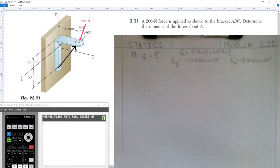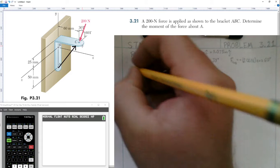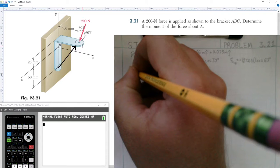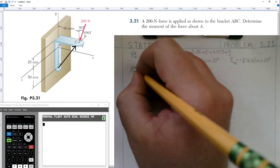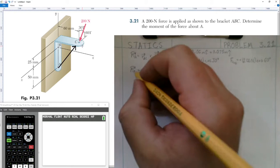I have my position vector here and my force components here. We can now simply take this moment equation and convert it into our matrix, take the determinant, and discover what the moment about point A actually is.